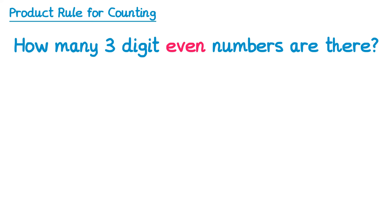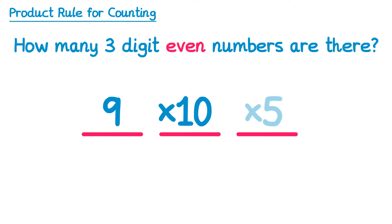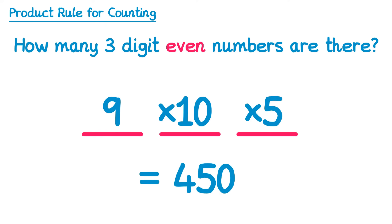What about how many three-digit even numbers there are? We draw a line for each digit. The first number could be any number from 1 to 9, so that's nine numbers. The second number could be anything from 0 to 9, so 10 numbers. But the final digit needs to be restricted to those that give an even number — it must end in 0, 2, 4, 6 or 8, so there are only five numbers. 9 times 10 times 5 gives you 450 possible numbers.